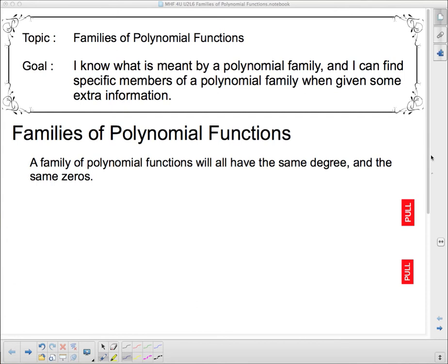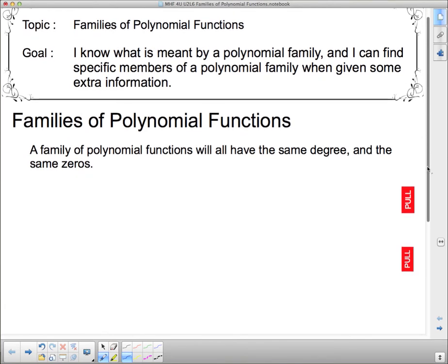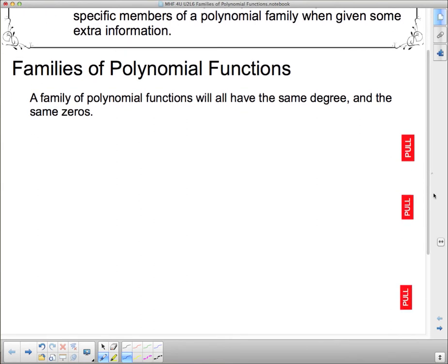Now, I think you're going to like this lesson because it's not going to be very long or difficult. And we've already kind of talked about this. So we're talking about families of polynomial functions. A family of polynomial functions will all have the same degree and all have the same zeros. That's the definition of a polynomial family.